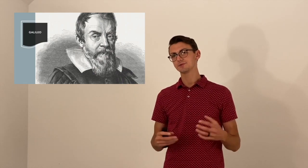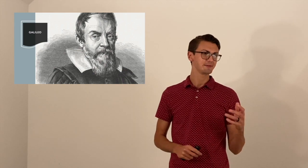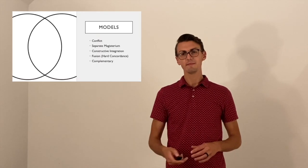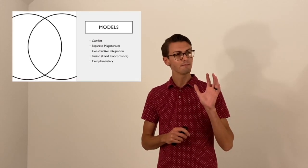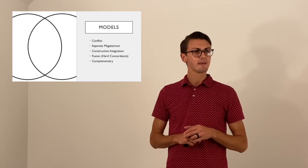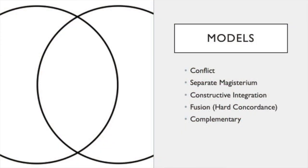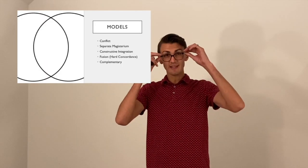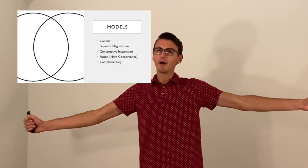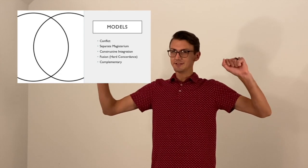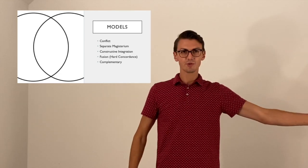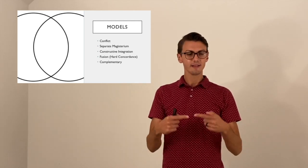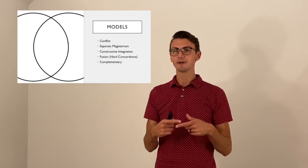Throughout this rocky relationship between science and faith, there have been about five different models. The first model is the conflict model - if you think of a Venn diagram with those two circles ripped apart, you see science on one side, faith and scripture on the other, with no way that the two could ever overlap or talk to each other.